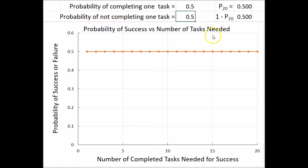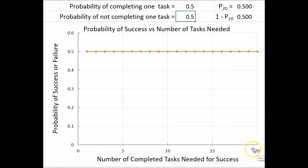And how does it depend on your probability of completing a given task? Here on the ordinate, we have the probability of success, and here the number of tasks needed for success. We started out with 0.5 as the probability, and of course in this mathematical model, it doesn't matter how many tasks you define as needed — the probability is going to be 0.5.